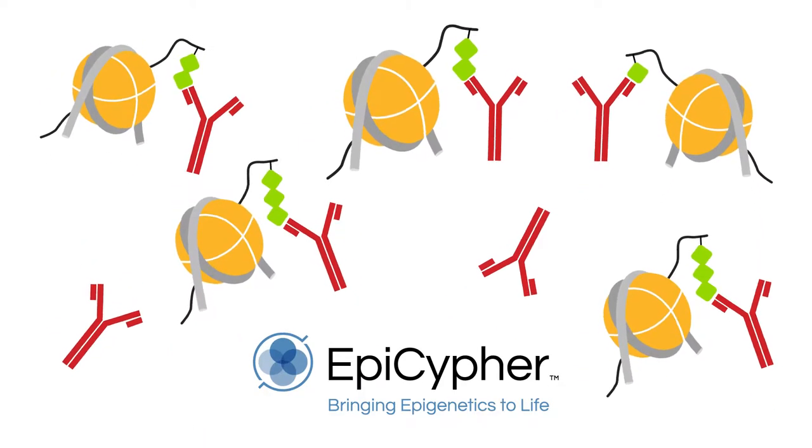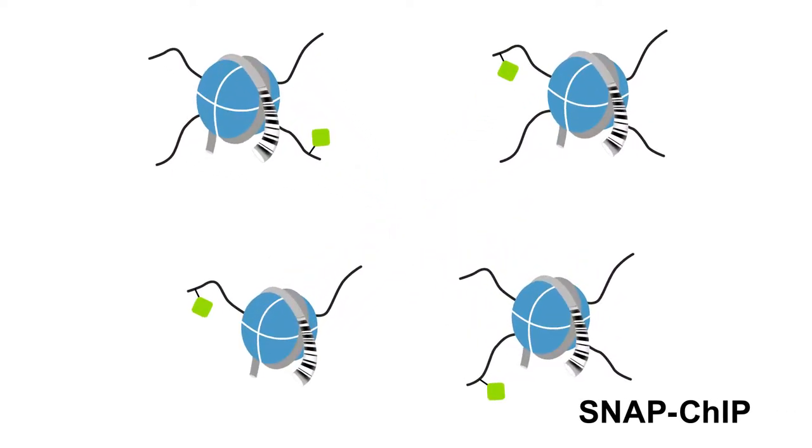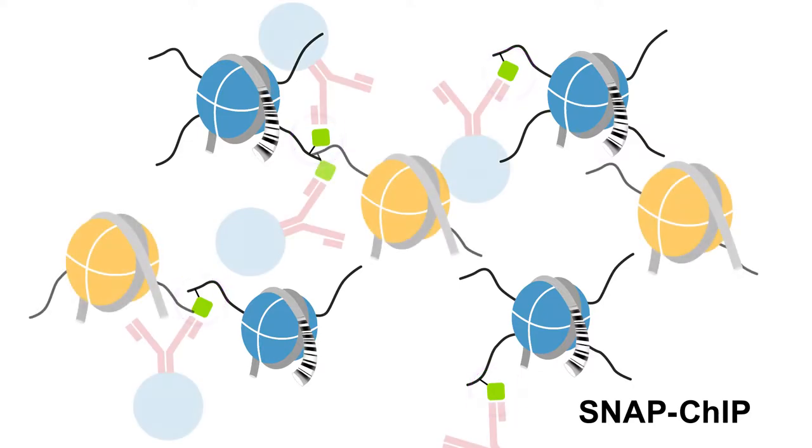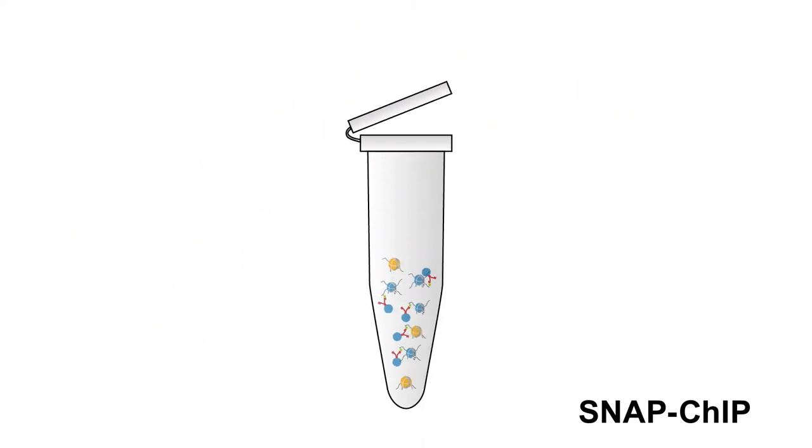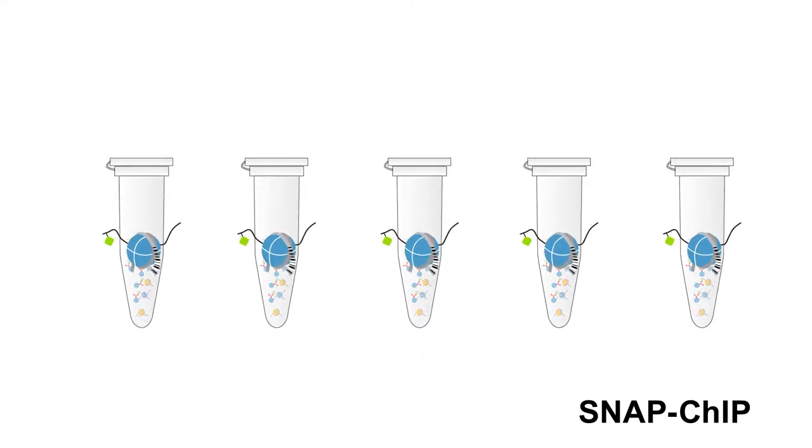That's where Epicypher SNAP-ChIP can help. SNAP-ChIP employs DNA-barcoded designer nucleosomes containing individual histone modifications. Spiking them into your sample lets you directly compare ChIP experiments by normalizing the amount of barcoded nucleosomes immunoprecipitated in each sample.